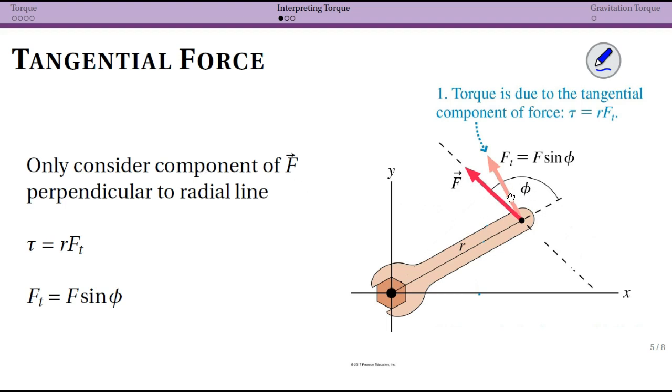So we have our force in the darker pink here and then the tangential component is a little bit less. I've created a triangle over here, a right triangle, that shows our main force vector, our tangential force component, and then our radial force component.